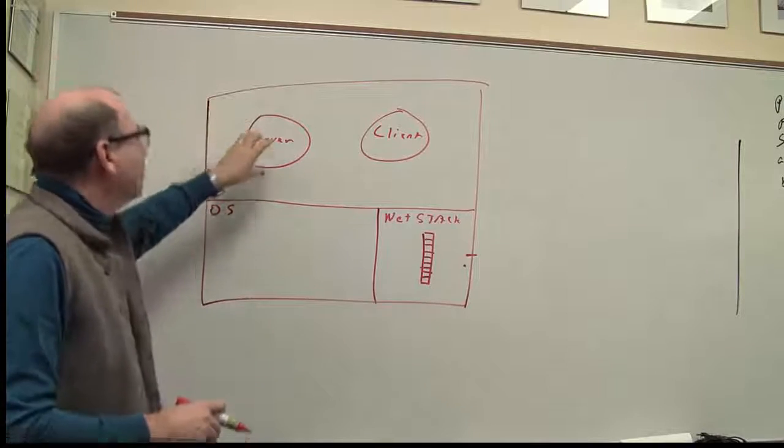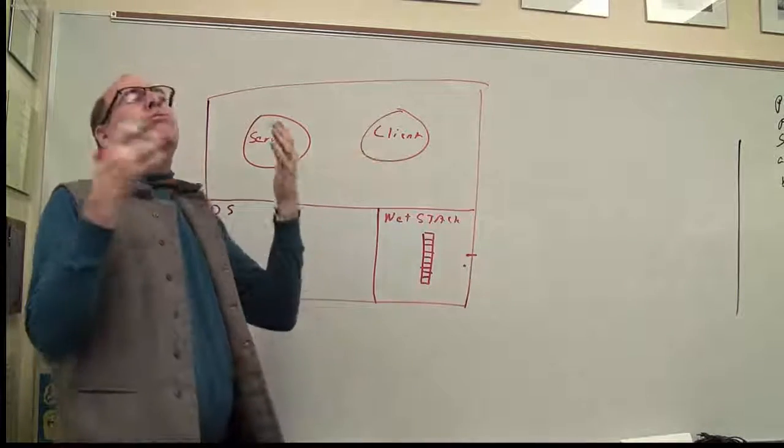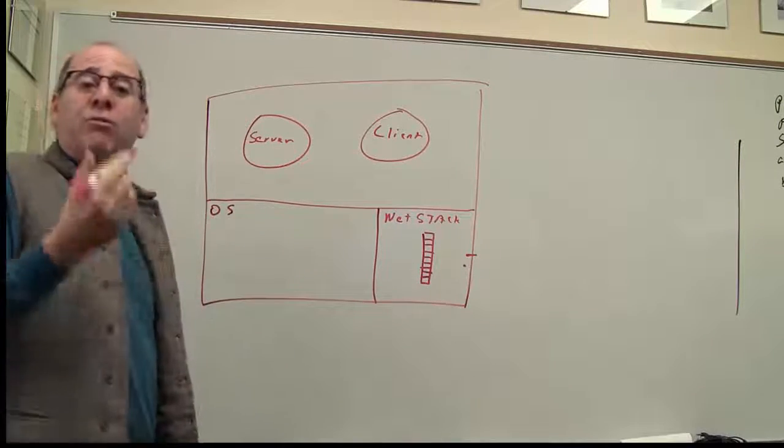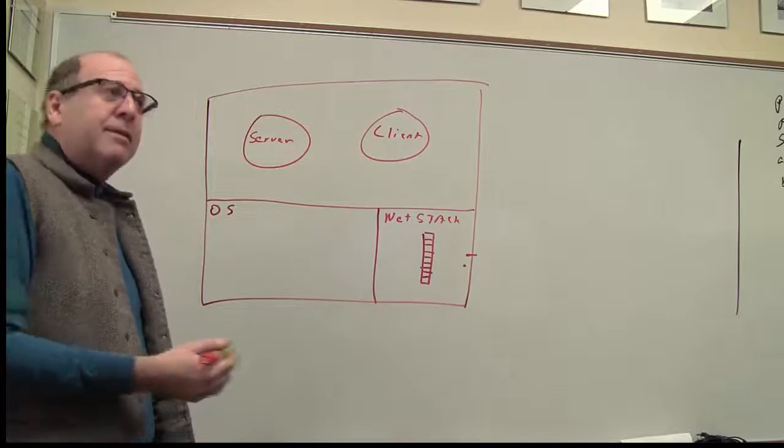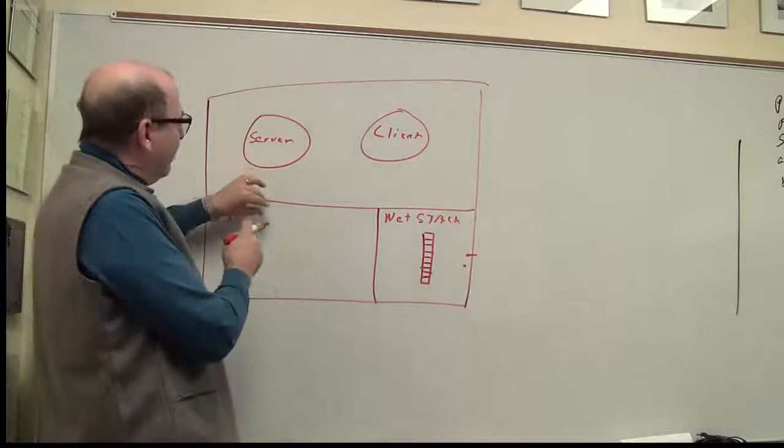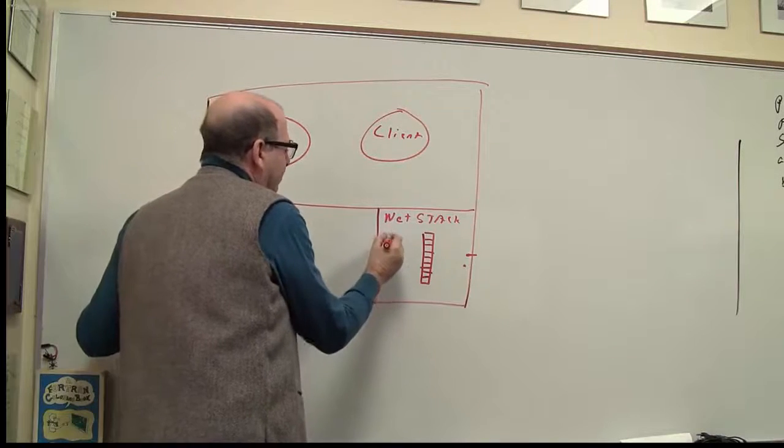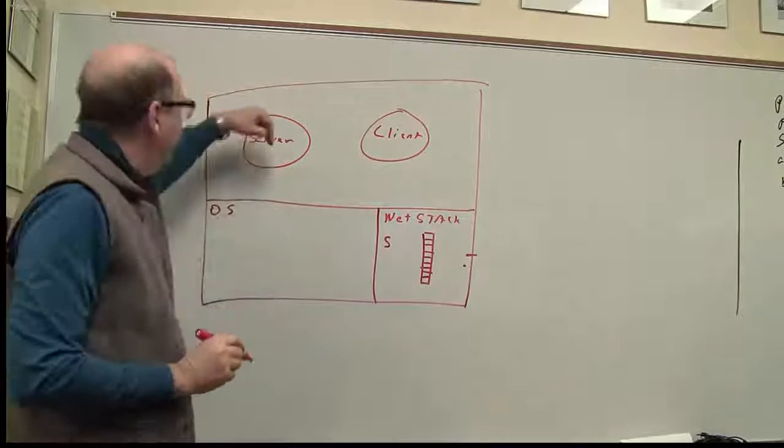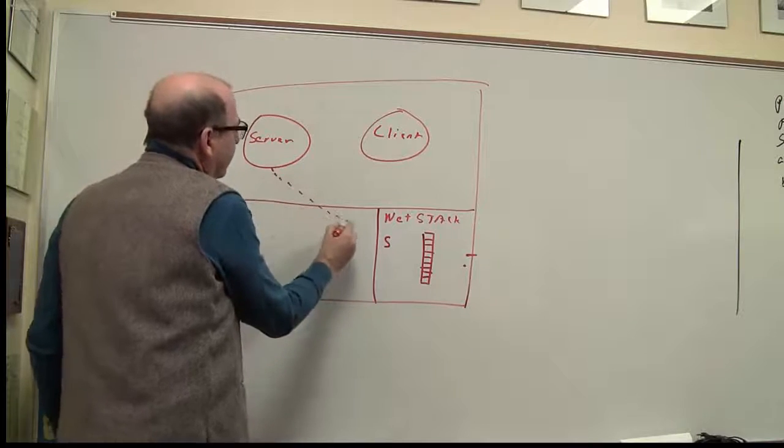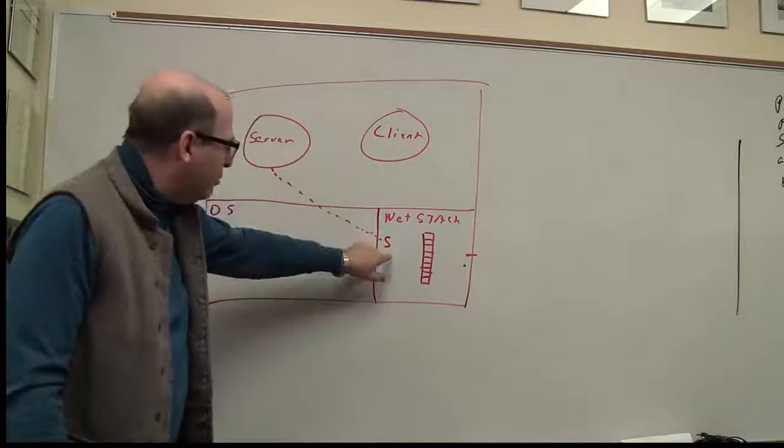By the way, the operating system doesn't even know this process is a server, doesn't know this process is a client, just knows it's running two programs. So let's say our server, who wants to communicate over the network, is going to have to make a socket. So he makes a request to the operating system for the network component. And then, a socket gets created. Essentially, the server gets a handle, a server process that requests the socket to be created, gets a handle that allows him to talk to that socket.